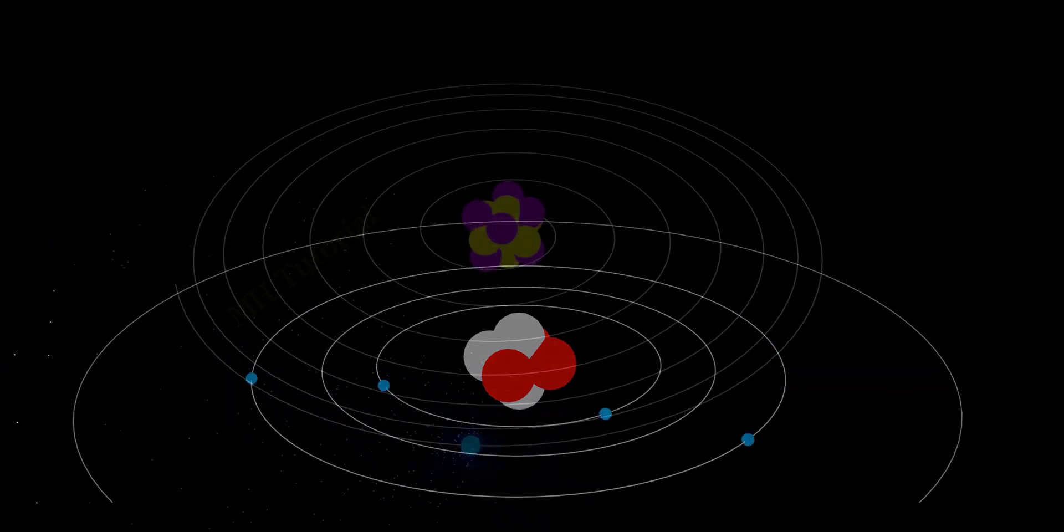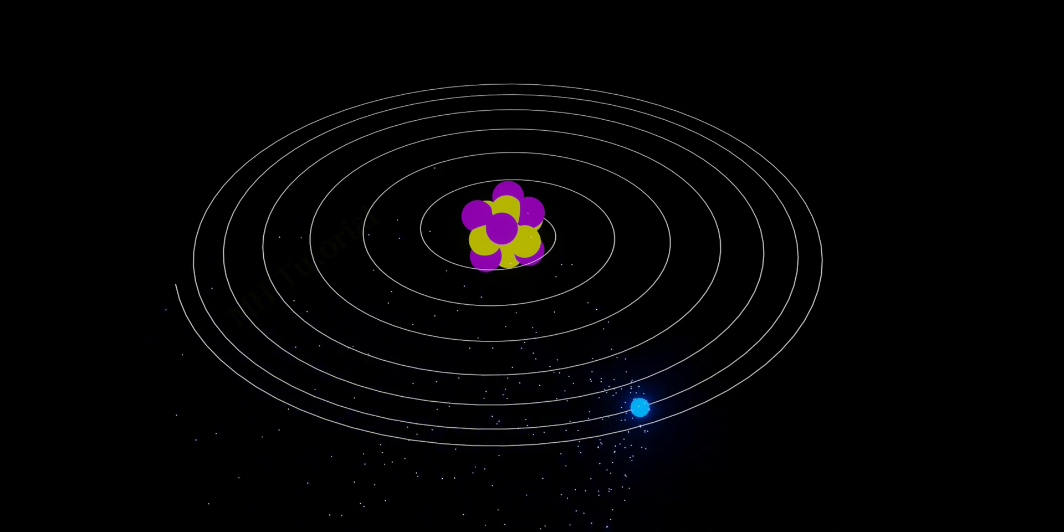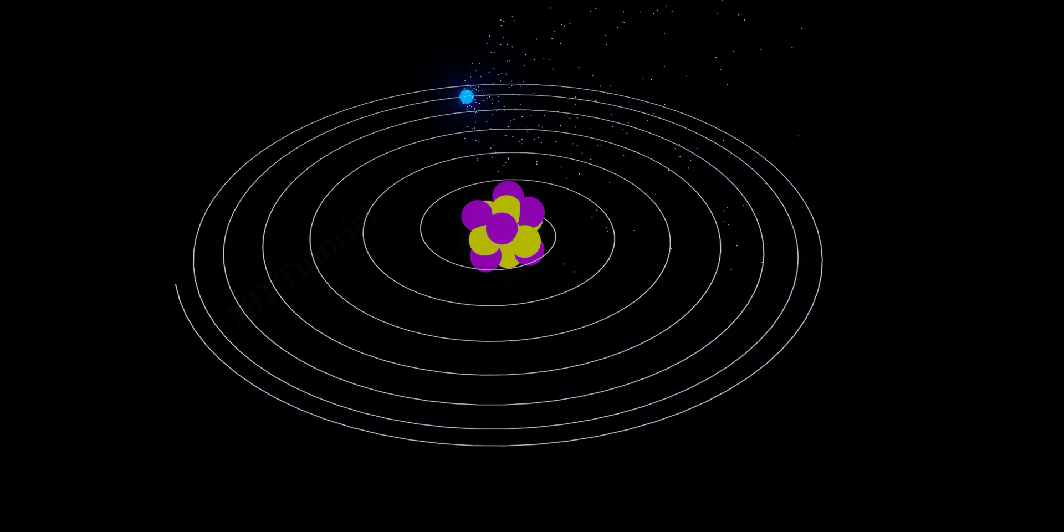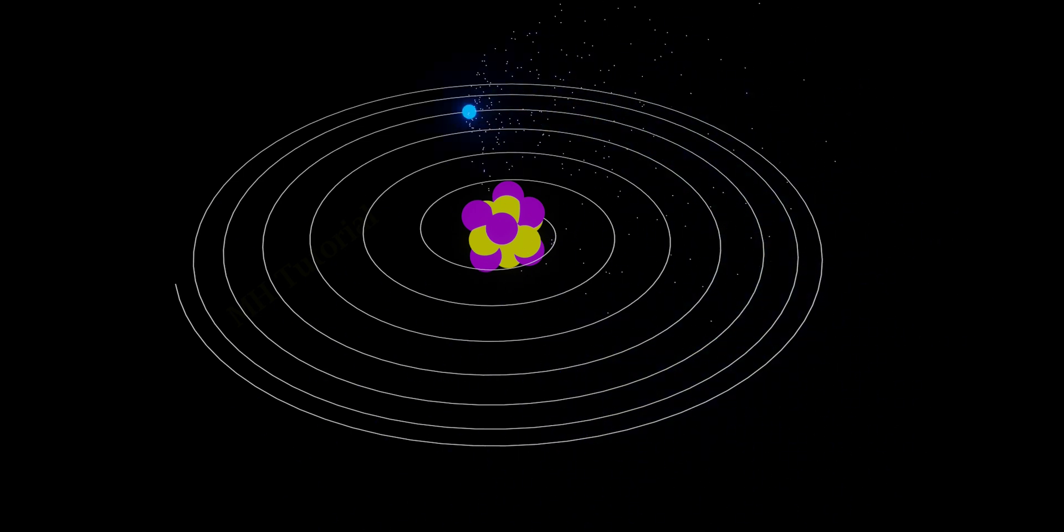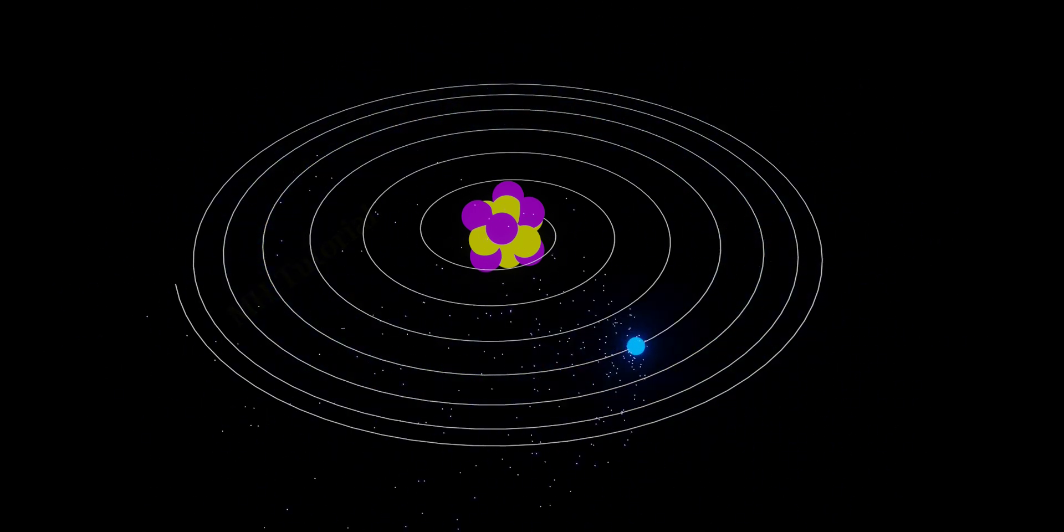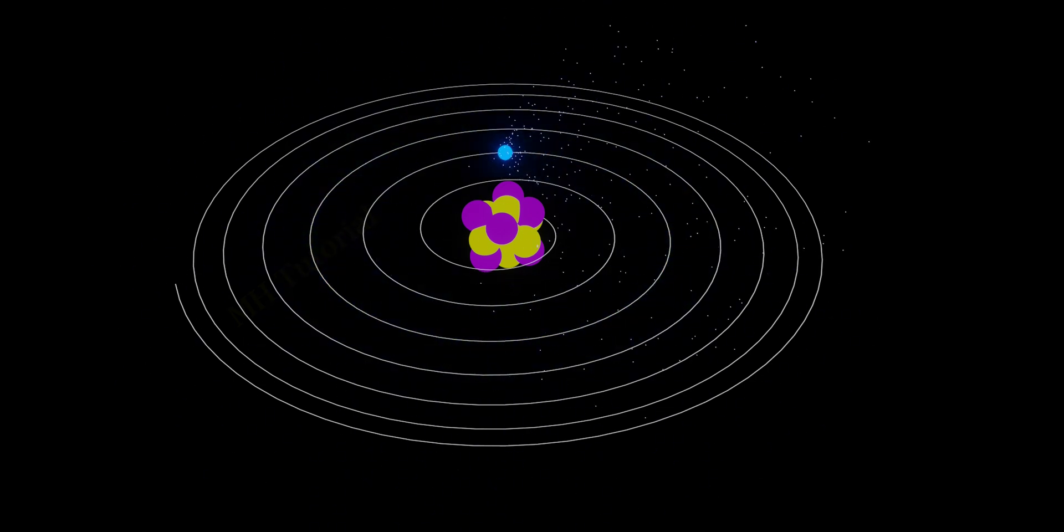But electromagnetic theory predicts that an accelerated charged particle should emit electromagnetic waves. Since electron is accelerating in its orbit, it should emit electromagnetic waves. Thus, its total energy should decrease over time. Meaning its orbit should decrease over time. And after a finite duration of time it will collapse on the nucleus, which may be called the death of an atom or the end of an atomic state.